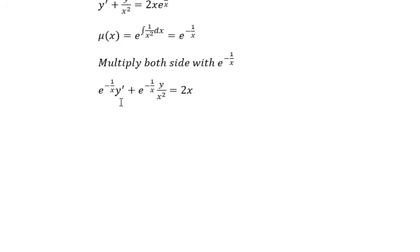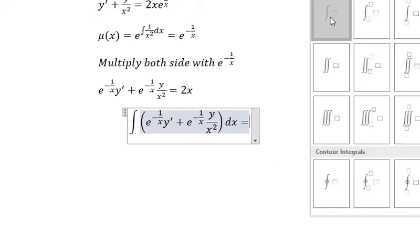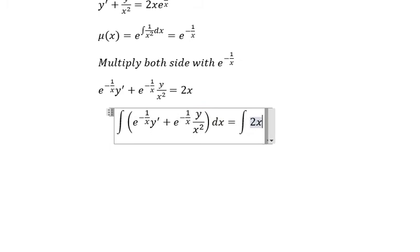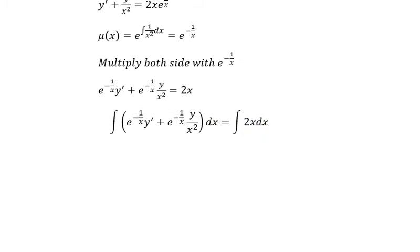Now we put the integral for both sides. On the left, you will get about e to the power of negative 1 over x multiplied with y equals to x to the power of 2 plus C, the constant.